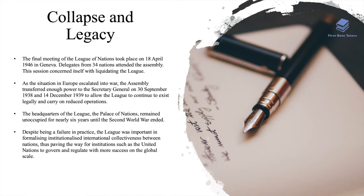The final meeting of the League of Nations took place on 18th April 1946 in Geneva. Delegates from 34 nations attended the Assembly, and this session concerned itself with liquidating the League. As the situation in Europe escalated into war, the Assembly transferred enough power to the Secretary General on 30 September 1938, and on 14 December 1939, to allow the League to continue to exist legally and carry out reduced operations. The headquarters of the League, the Palace of Nations, remained unoccupied for nearly six years until the Second World War ended. Despite being a failure in practice, the League was important in formalising institutionalised international collectiveness between nations, thus paving the way for institutions such as the United Nations to govern and regulate with more success on the global scale.